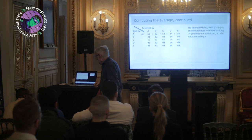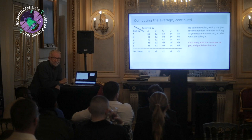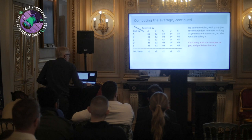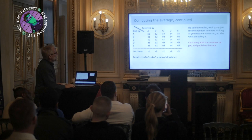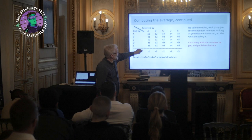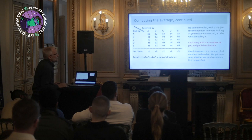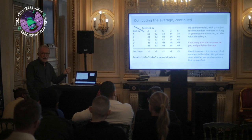Now everybody has received some column of numbers, and we're going to tell each person to simply add up the numbers they got and publish the sum. So you add up the column, and all these column sums become public. Now we can get the result easily: just add up those column sums and we get the sum of the salaries. Why? Simply because the rows sum to the salaries, so if I sum up the salaries, I've effectively summed all numbers in the table. What we did was just sum them in a different way — we summed the columns first, then summed the column sums. The sum is the same. So we get the right result, and we managed to do this without revealing single salaries. Everybody learned the sum, but otherwise just random numbers.